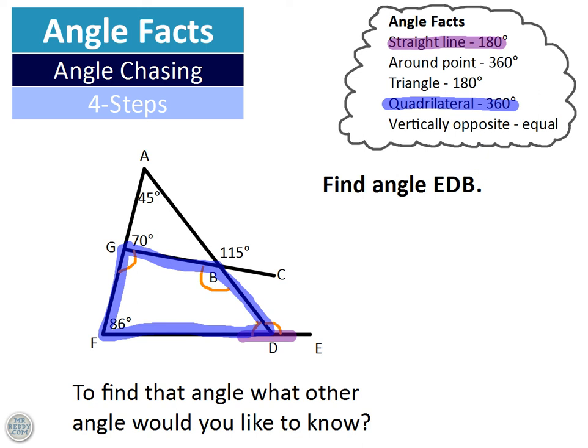Okay, so what angle would you like to know to find this one? I'd like to know this angle here. Why? Because there's an angle, there are two angles on a straight line. There's a straight line, that one and that one. They're going to add up to 180.